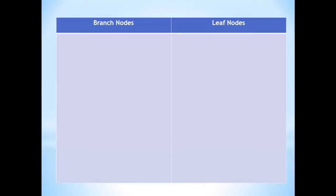Talking about nodes, a node will be every component that you add to your stage in your application. And we will have two types of nodes. The first one will be a branch node. A branch node is called a branch node because it can contain more nodes — you can place more nodes inside of them.